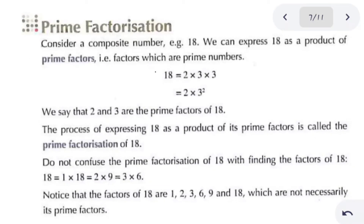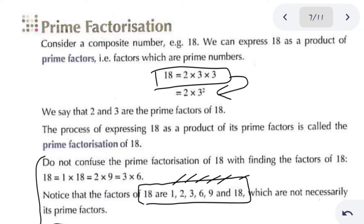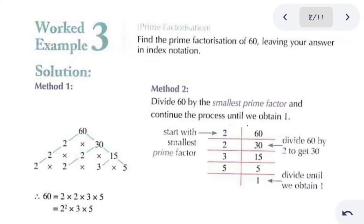Now the main concept: prime factorization. We can split a number into its prime factors. For example, 18 is split into 2, 2, 3, and 3, then written in index notation. Note that prime factorization is different from finding all factors — in prime factorization, the factors can only be prime numbers, whereas factors of 18 include 1, 2, 3, 6, 9, and 18.